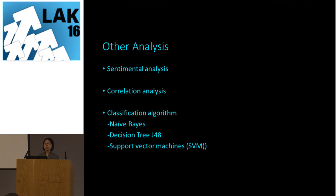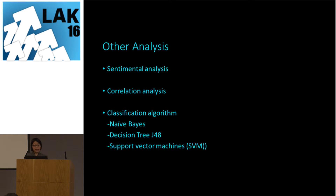We also conducted other analyses, including sentiment analysis to explore the emotional aspect of students' journals, and correlation analysis to identify factors related to journal grades. After identifying these factors, we used classification algorithms — Naive Bayes, decision tree, and SVM — to build a model to predict journal grades.